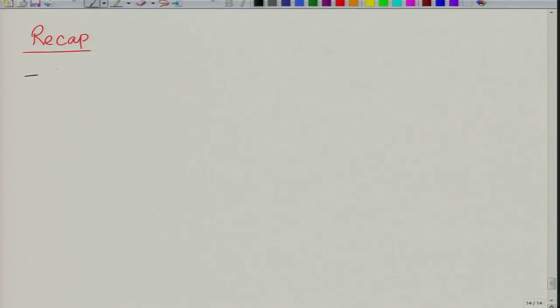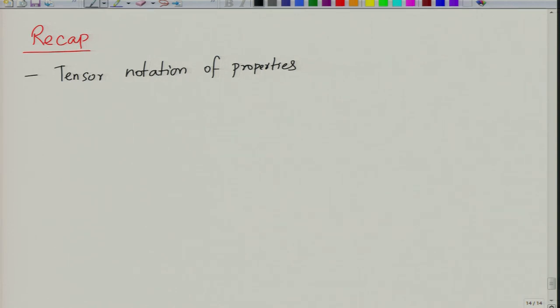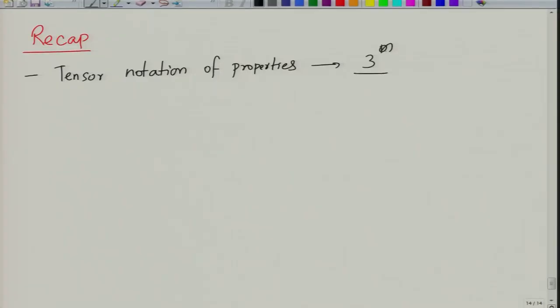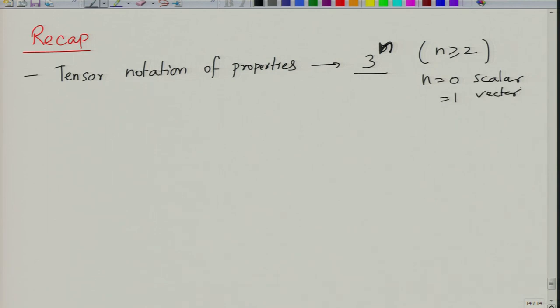In the last lecture we introduced tensor notation of properties, which is important from the perspective of properties in crystals because the properties of materials are not isotropic. Stress is a tensor, strain is a tensor, and tensors are nothing but matrices with more than 9 components. A scalar is a rank-0 tensor, defined by the formula 3 to the power n. For a tensor, n is greater than or equal to 2; n equal to 0 means scalar, n equal to 1 means vector, and n greater than or equal to 2 means tensor.